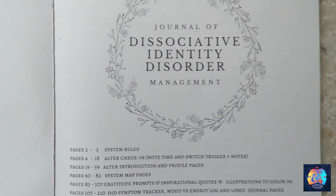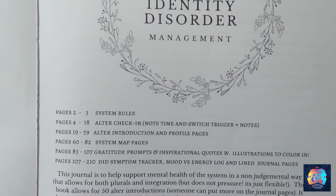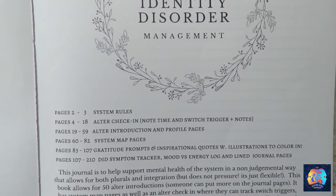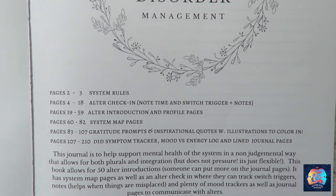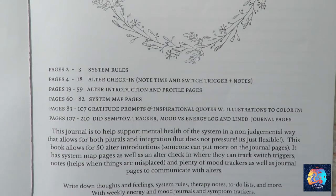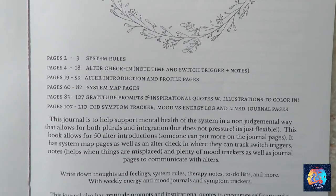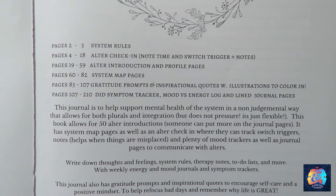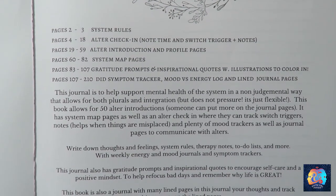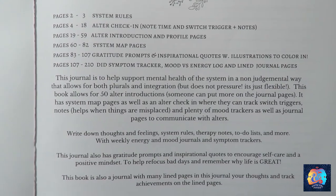If you're looking for a little structure or just a little more in a journal, there are some really good ones you can buy online that are designed specifically for systems. One that I have bought, and that I know some other systems have bought and really liked as well, is one I found on Amazon — you can actually find a lot of different versions with some different cover art that are really pretty. The journal includes sections for system rules, alter check-in, alter introduction and profile pages, system map pages, gratitude prompts and inspirational quotes with illustrations you can color in, DID symptom trackers, mood and energy logs, and line journal pages for journaling.